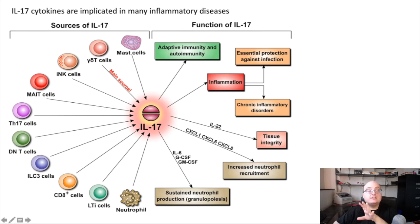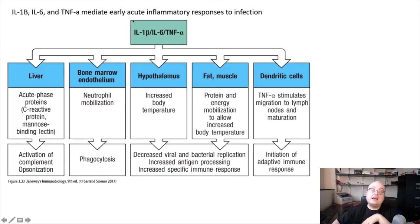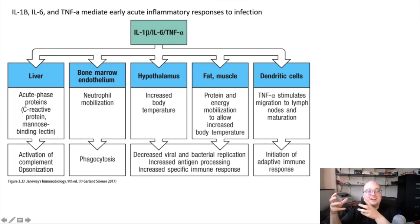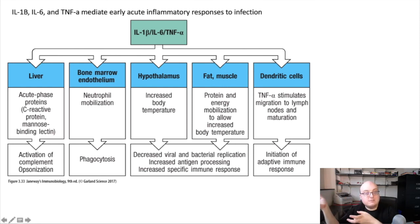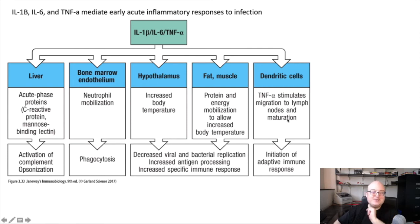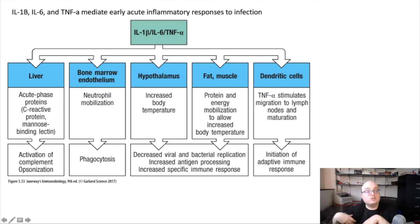I want to circle back and focus again on TNF and IL-1, because they make up a triad of cytokines along with IL-6, which is a hematopoietin cytokine. These three cytokines together form a group that are really the primary innate immune cytokines mediating our earliest systemic inflammatory responses to infection as part of the innate immune system. They are all highly pleiotropic cytokines — they signal to all sorts of different tissues and do all sorts of different things in those tissues.